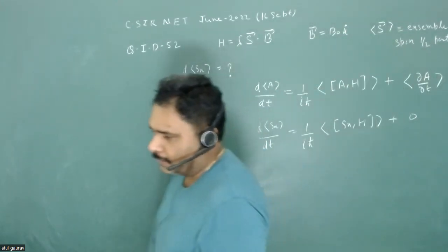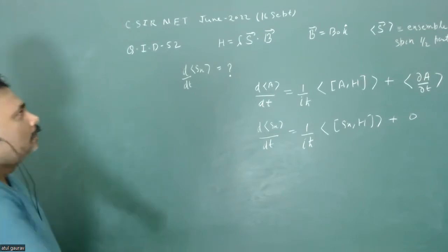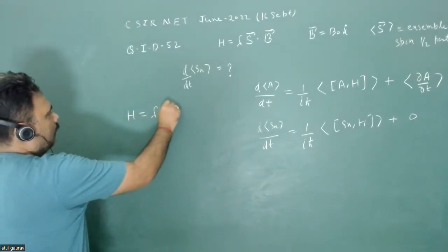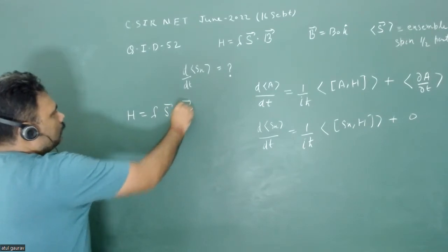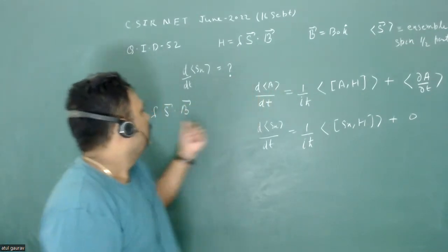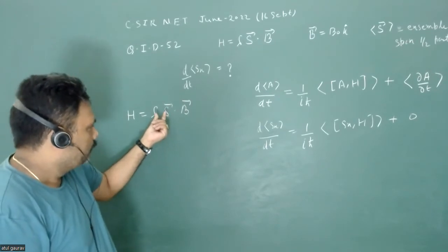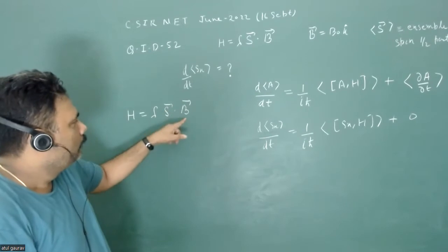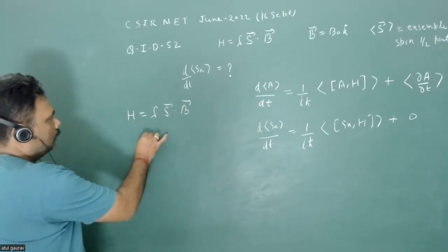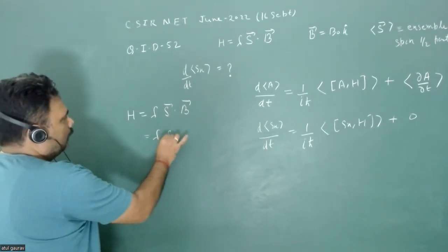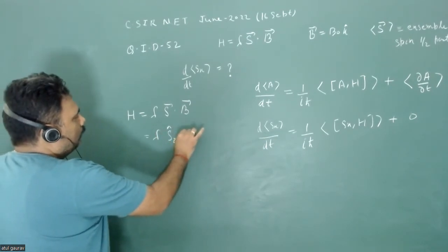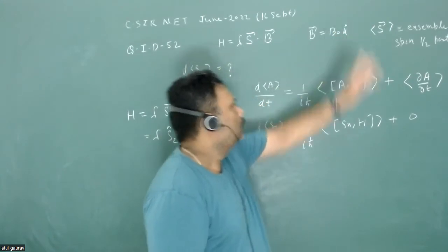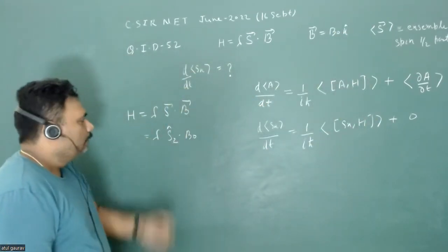So now what will be h? What is Hamiltonian h? Hamiltonian h is lambda s dot b. Since b is only in the k direction, the component of s in the k direction will be only going to couple with this particular b. So this is actually lambda sz dot b0, because b is b0 magnitude times k direction. So this is my Hamiltonian.